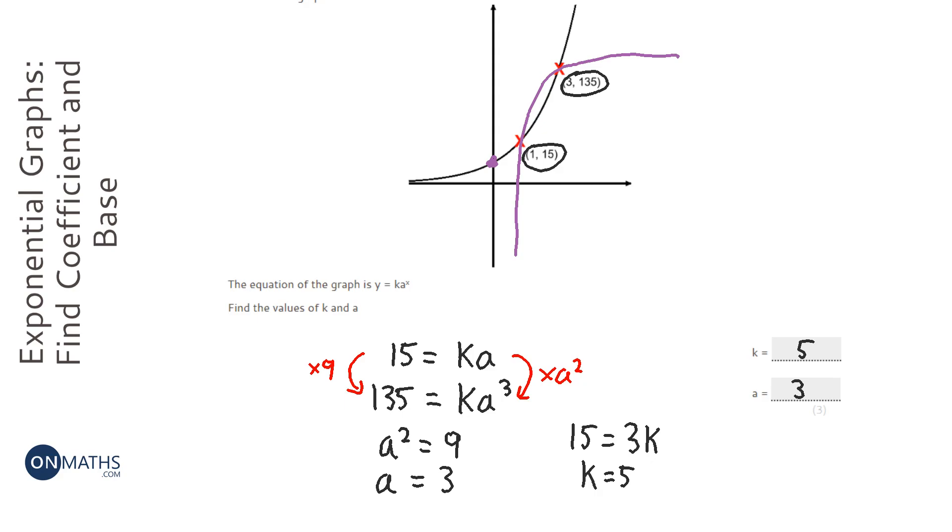And I just need to check that. So let's do the second equation. So 5 times 3 cubed, so 5 times 3 cubed is 135. So I know I've got it right.